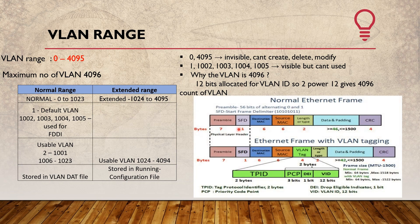In a normal Ethernet frame, the fields are: Preamble, SFD, Destination MAC address, Source MAC address, Length, Data and Padding, and CRC. With VLAN tagging, a 4-byte VLAN tag is inserted into the Ethernet frame between the Source MAC and the Length field. This is called 802.1Q VLAN tagging. The tag contains the 12-bit VLAN ID.